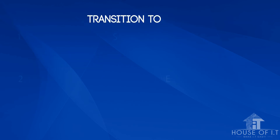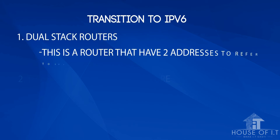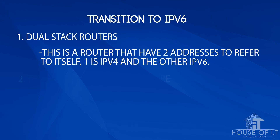Now let's move on to transition to IPv6. IPv6 is quite a considerate protocol, as it has many easy ways to transition from IPv4 to IPv6. One way is to use dual stack routers — a router that has two addresses, one IPv4 and one IPv6. It can take a packet from IPv4 and send it to the IPv6 network.